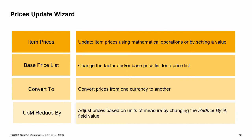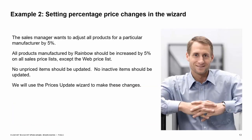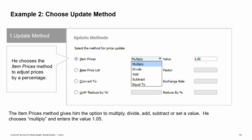Let's look through some examples. The sales manager wants to adjust all products for a particular manufacturer by 5%. All products manufactured by Rainbow should be increased by 5% on all sales price lists except the web price list. No unpriced items and no inactive items should be updated. We will use the prices update wizard to make these changes. The first step in the wizard is to choose the update method. In our first example, the sales manager wants to increase the item price by 5%, so we choose the item prices method.